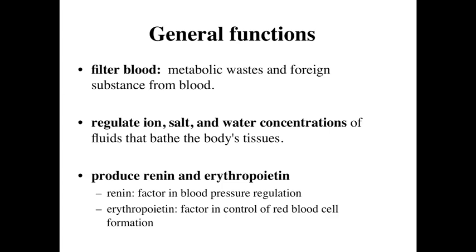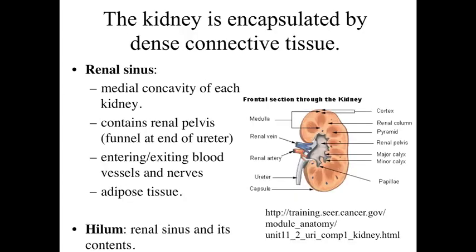Additional functions associated with the urinary system include the production of renin and erythropoietin. Renin is a factor in regulation of blood pressure, and erythropoietin is going to be a factor in control of red blood cell formation — again, related to regulating what's occurring within the cardiovascular blood system.